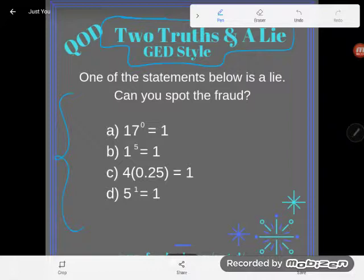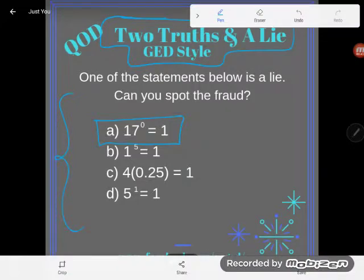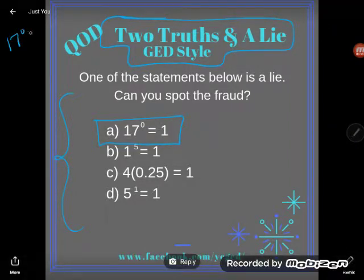So we are looking for the lie. First thing is that students' eyes are automatically drawn to statement a. A lot of students right off the bat tell me that does not make sense. They tell me 17 to the zero power, and they give me one of two answers.